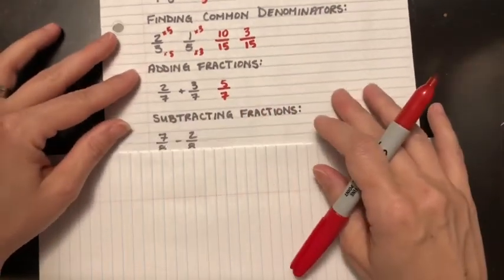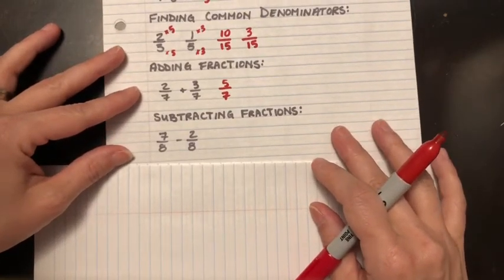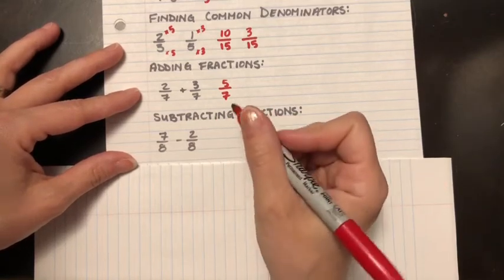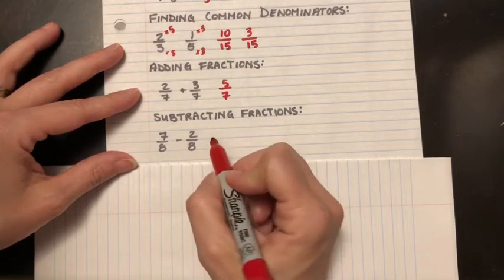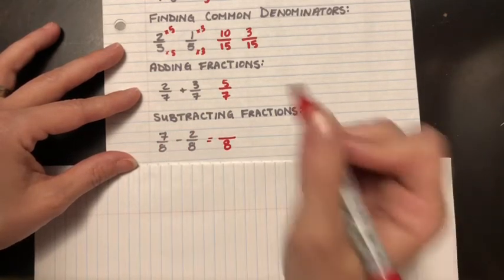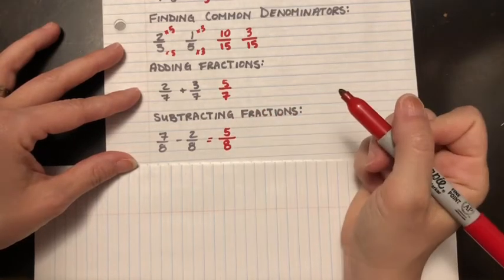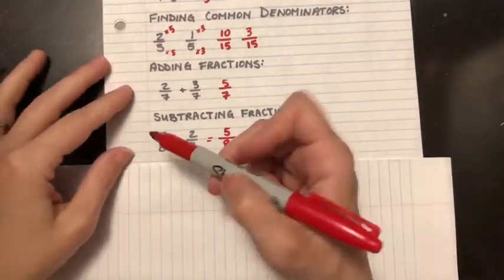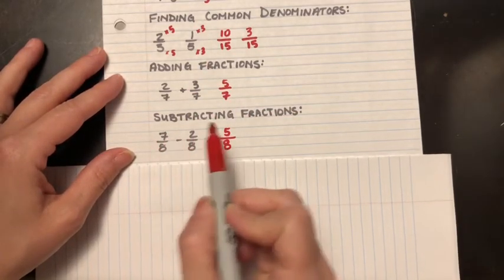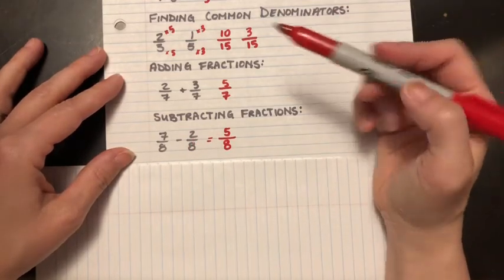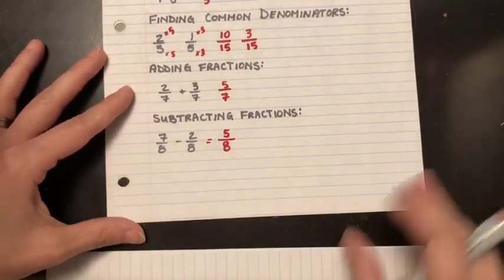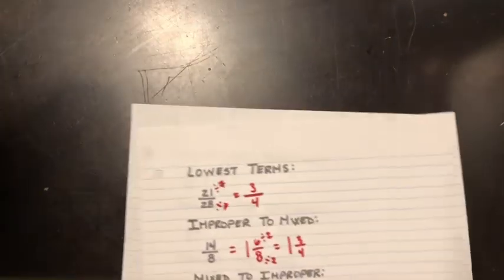Next one: subtracting fractions. Here I've got 7 over 8 subtract 2 over 8. I'm making sure my bottoms are the same—my denominators are the same—and then after that, I just have to subtract the tops. So it's going to be 5 here, and that's also already in lowest terms. If I had a mixed number here and this first fraction numerator was smaller than the second fraction numerator, I would have to turn it from a mixed number into an improper fraction so I can do my subtracting.